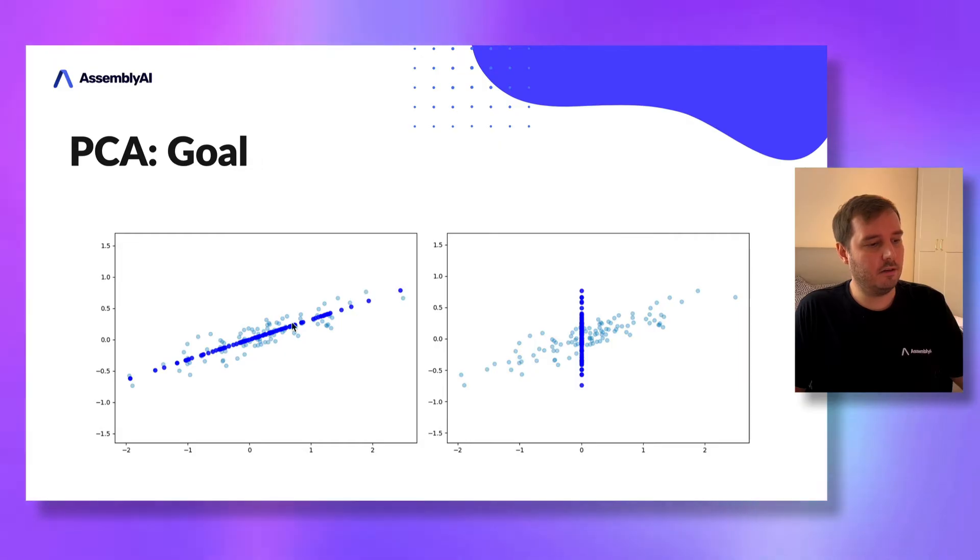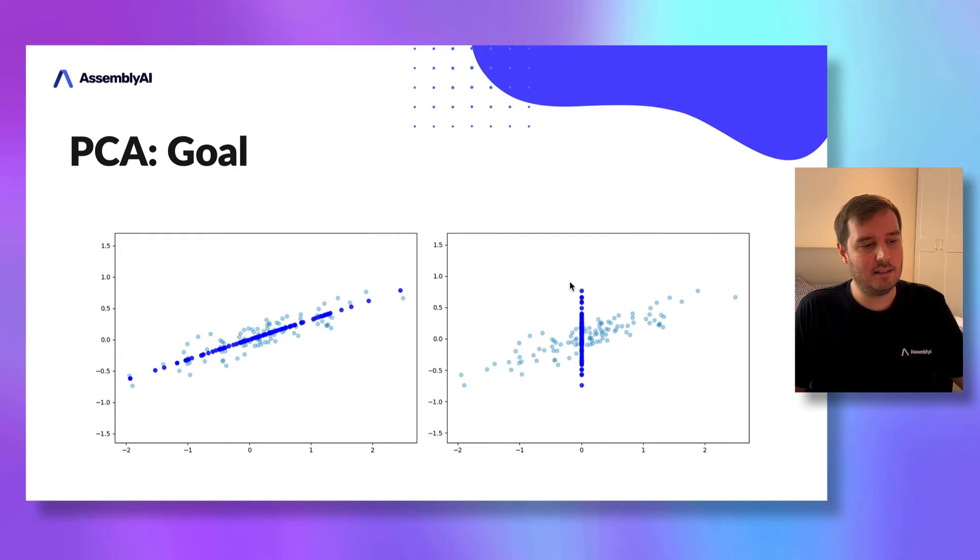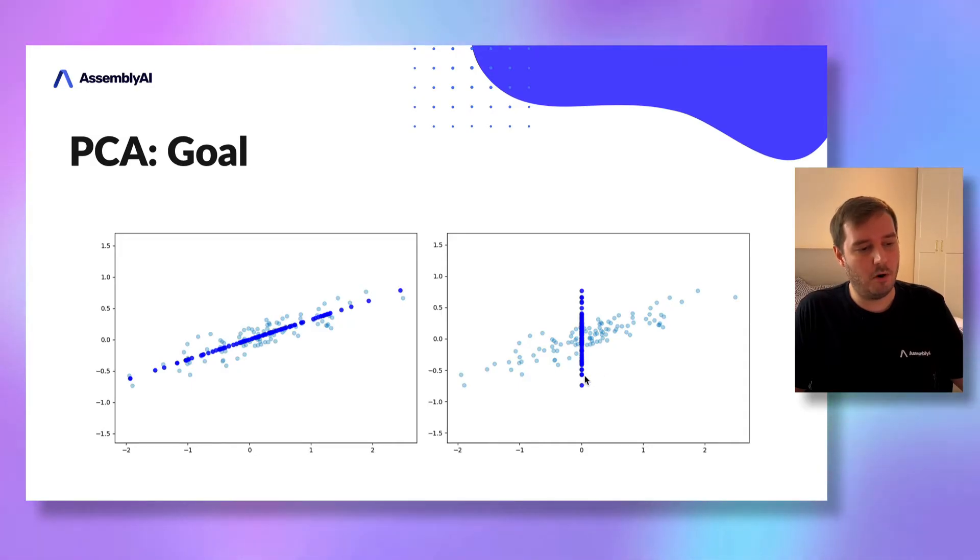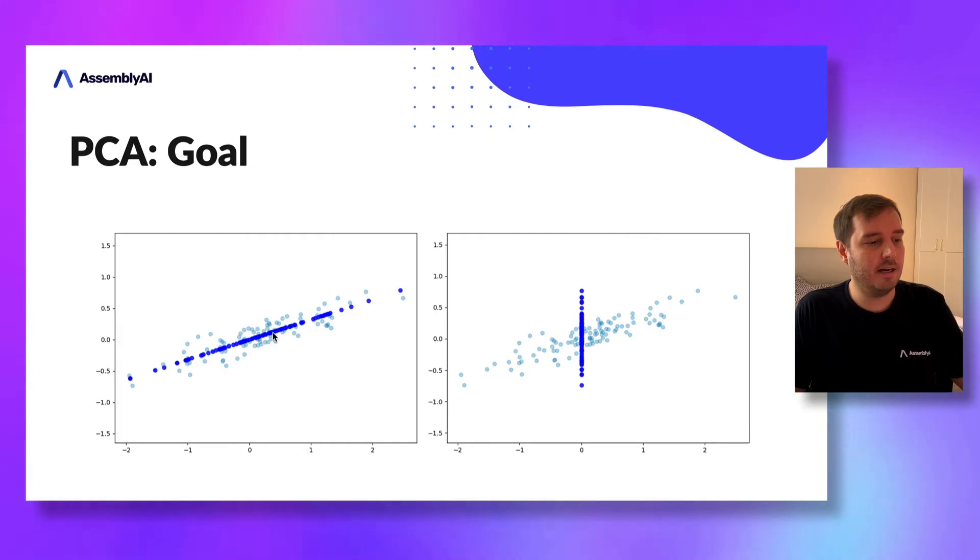Here, the data has maximum spread, so maximum variance. On the other hand, on the right side, if we take this axis and map the points onto this line, then a lot of points will end up on the same point, so we lose a lot of information. That's why maximizing the variance is very important here. This is the concept of PCA.